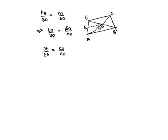Now if we consider the line segment EO, it divides DA in the proportion DE by EA which is equal to CO by AO.